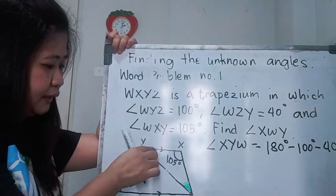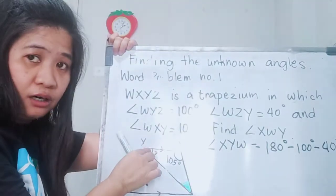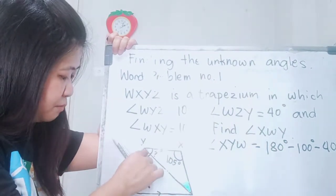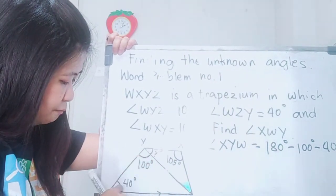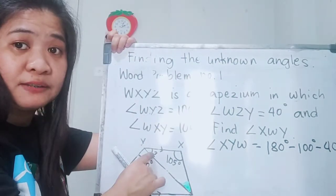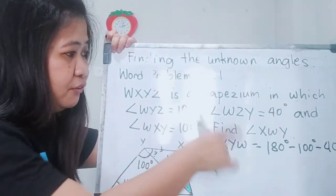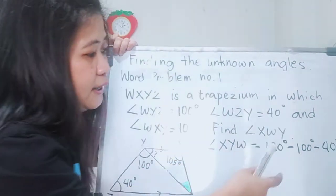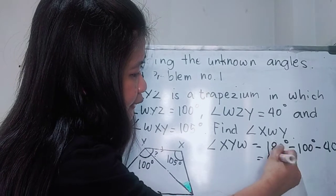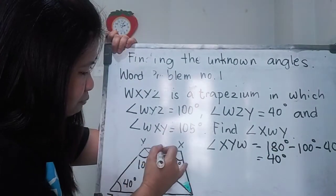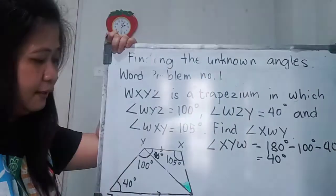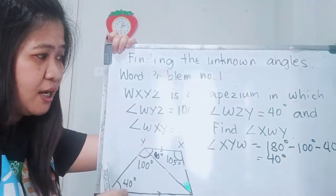The two angles make up angle XYZ and add up to 40, becoming 180. So to find the missing angle, subtract: 180 minus 100 minus 40. The answer is 40 degrees. Therefore, this part here — angle XYW — is 40 degrees. Now, this is a triangle.